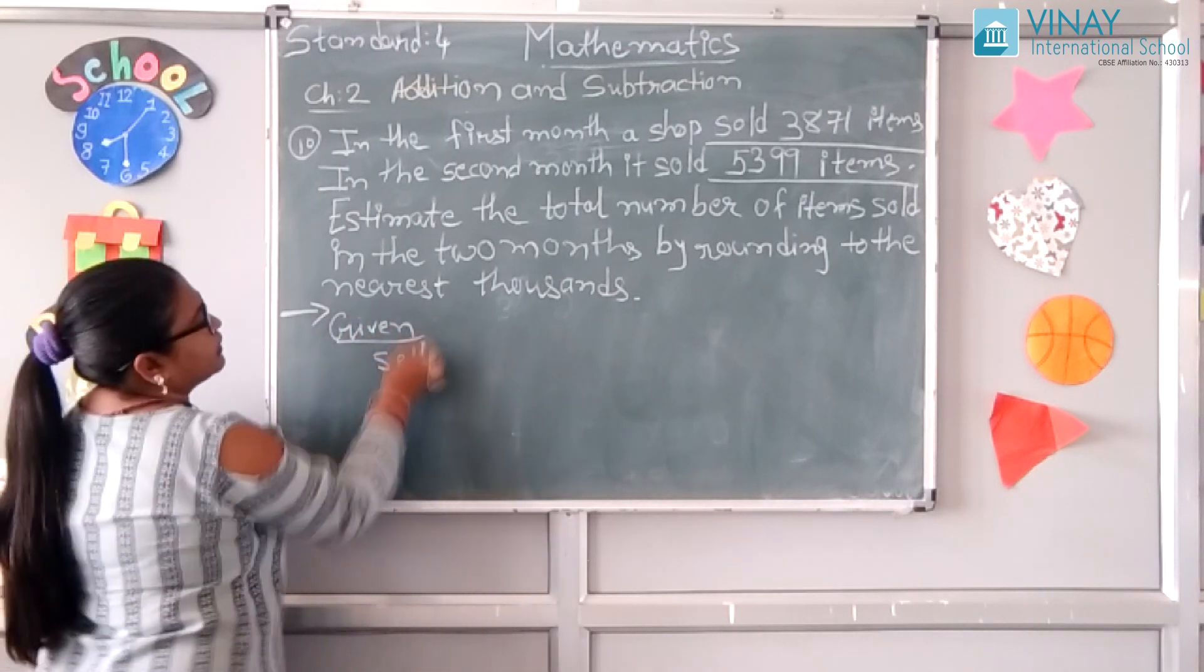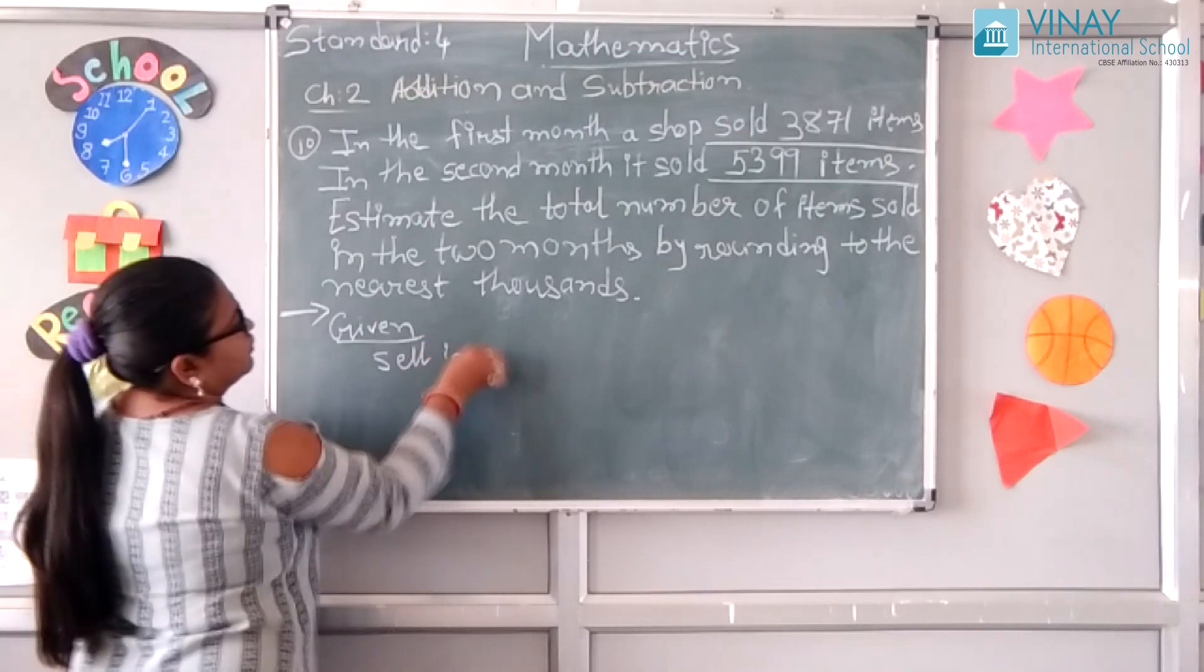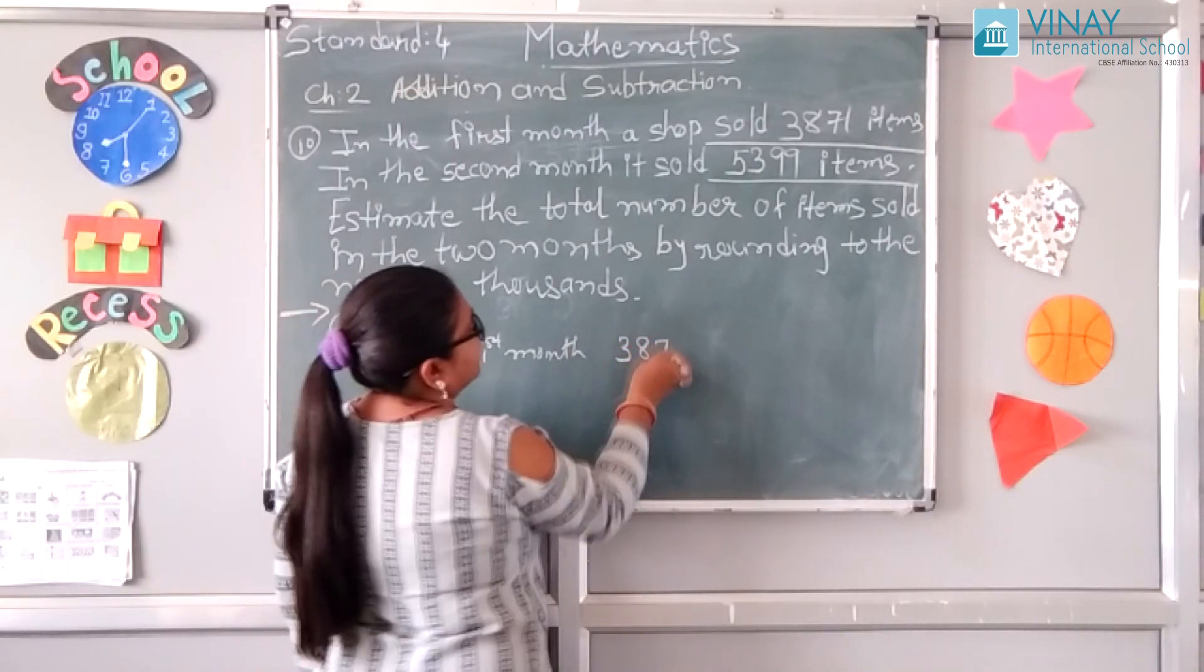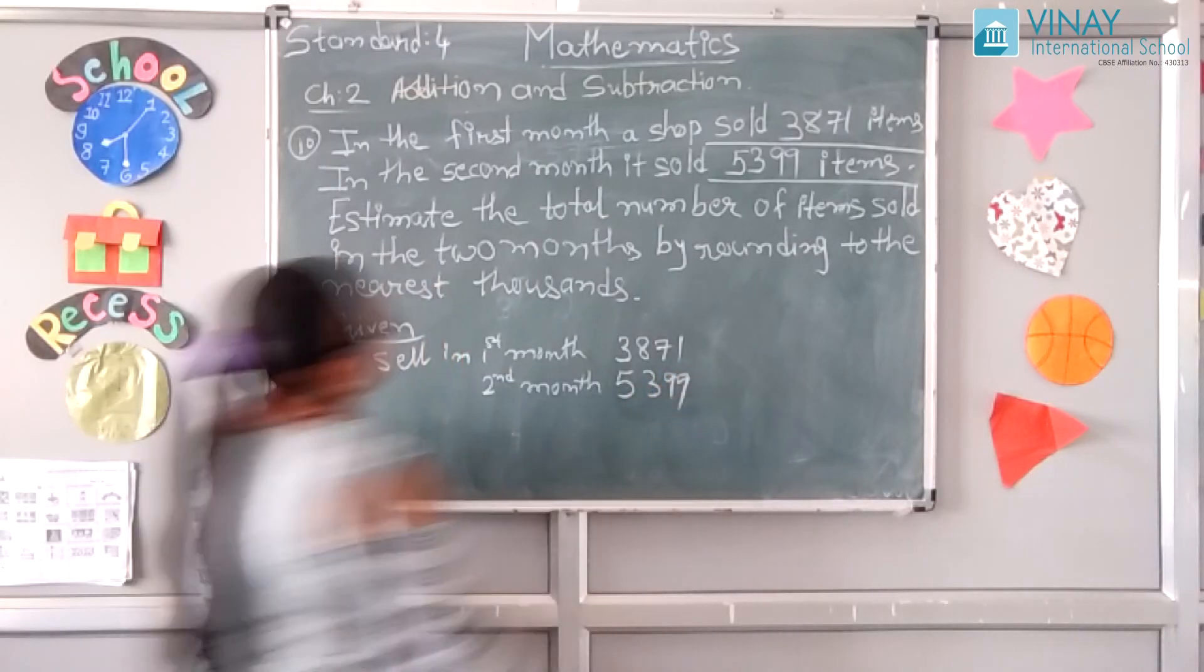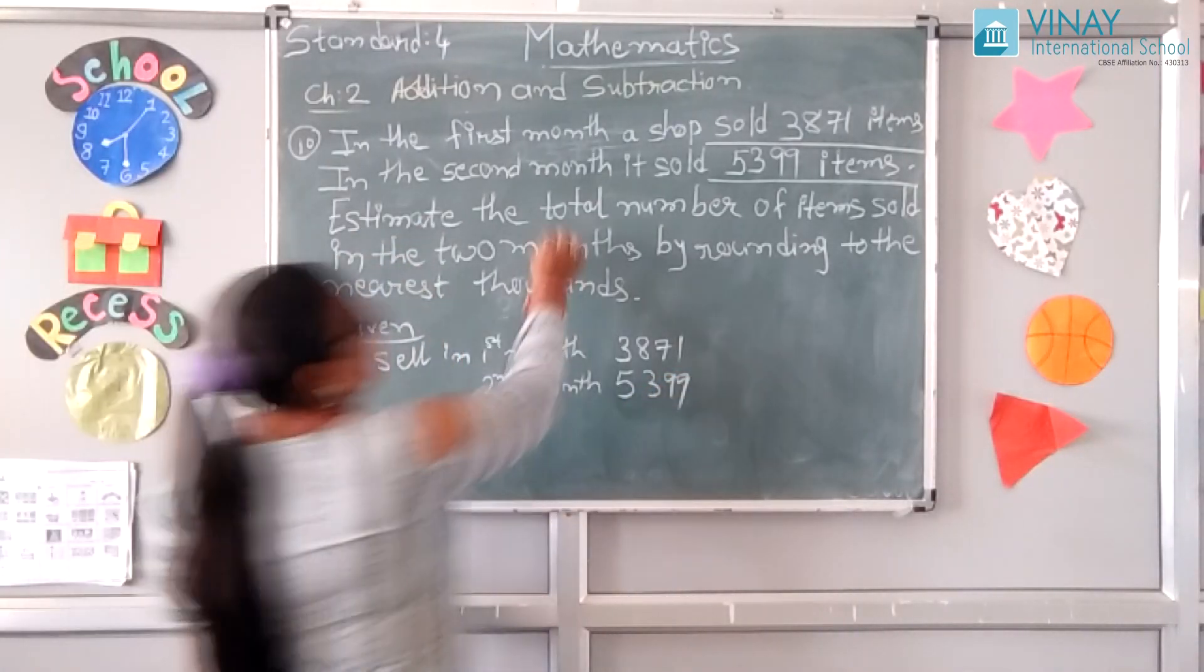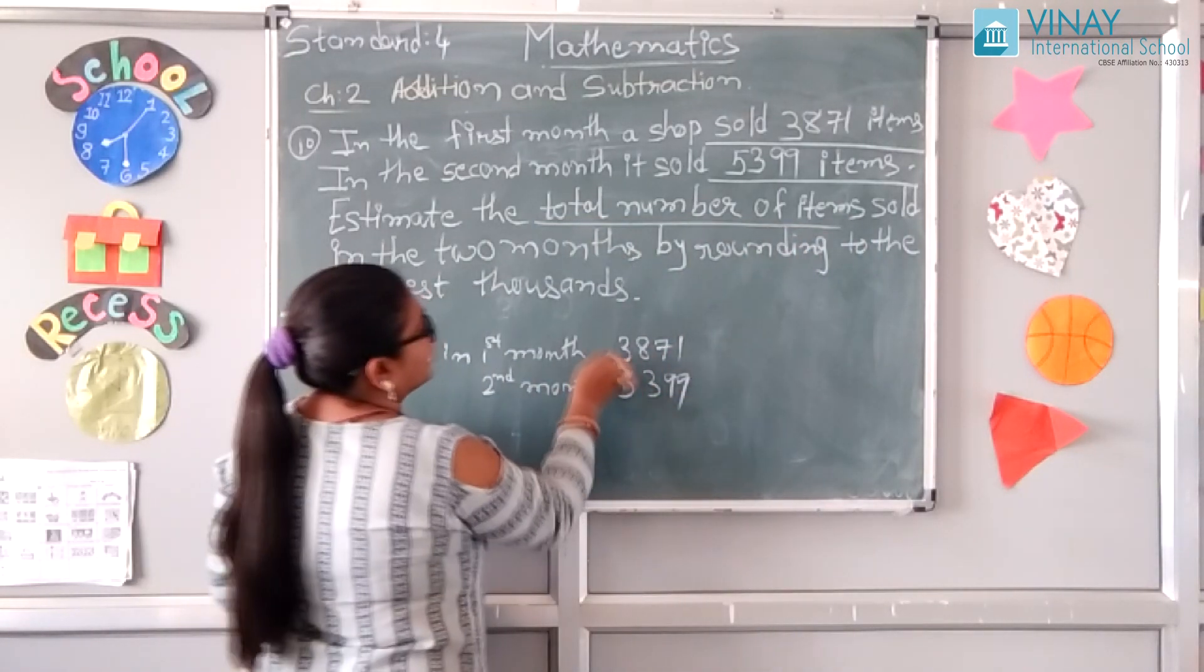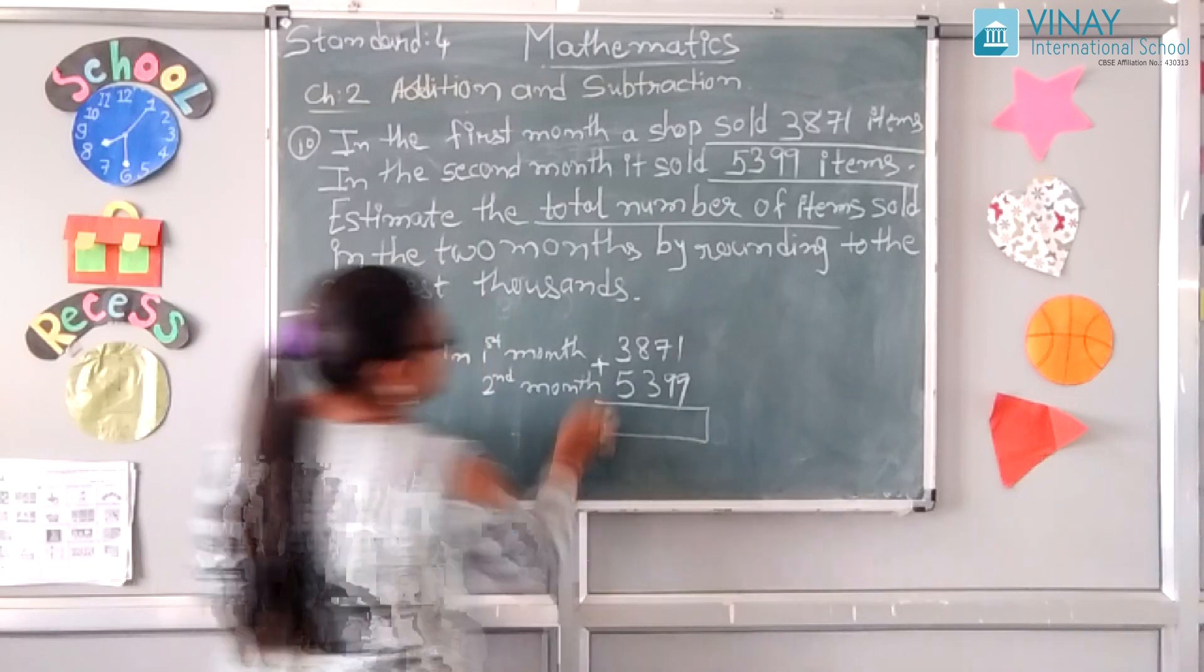Sold in first month 3871 items. Second month 5399. Estimate the total number of items. First of all, we have to do addition.